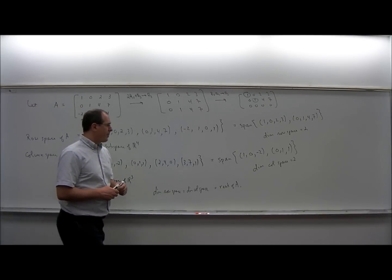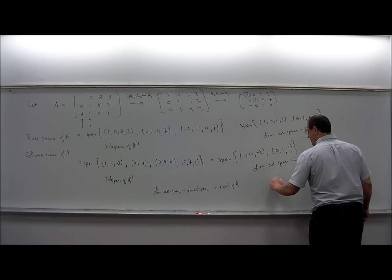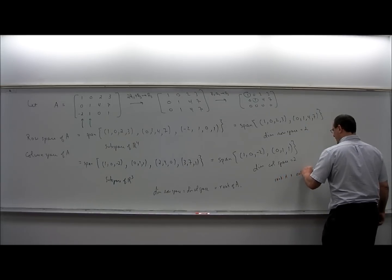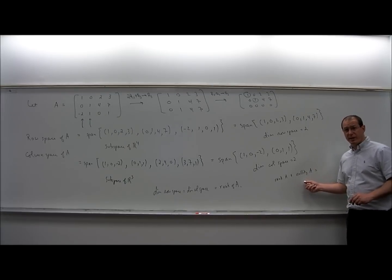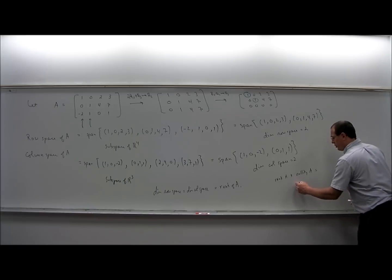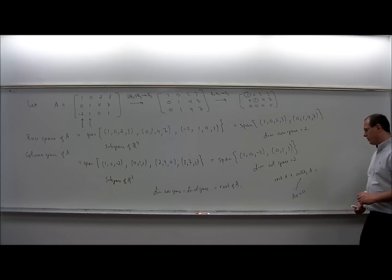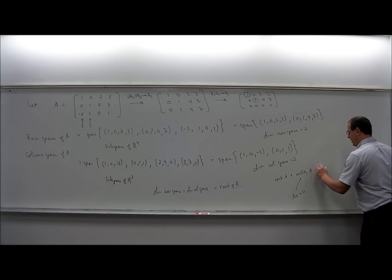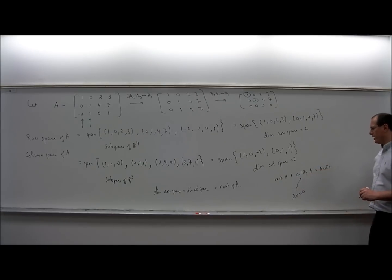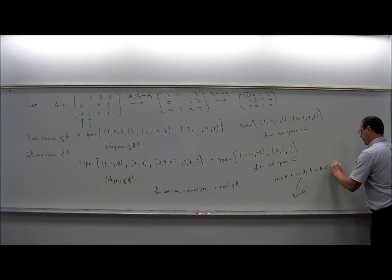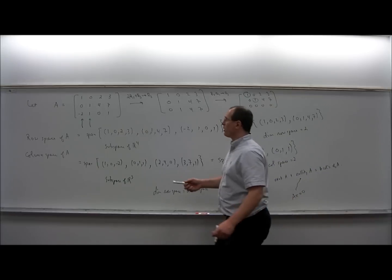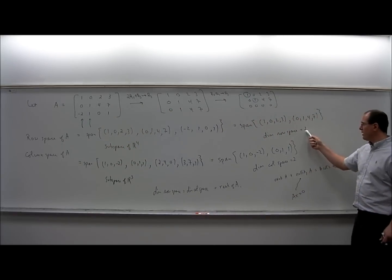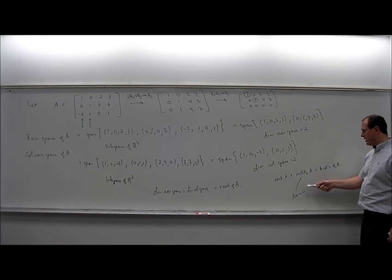One other small fact: another theorem says that the rank of A plus the nullity of A equals the number of columns of A. The nullity is the dimension of the null space — the solution space of the homogeneous system Ax = 0. In this example, A had four columns and rank 2, so the nullity equals 4 minus 2, which is 2.